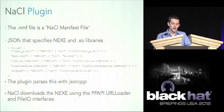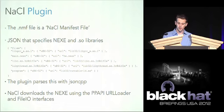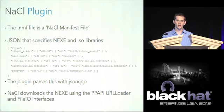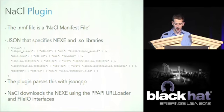The Native Client plug-in looks at the URLs in the manifest and uses the Pepper interfaces — specifically the URL loader and file I/O interfaces — to download the Nexi module. It tells Pepper: here's this plug-in, download it for me, put it on disk or in a memory buffer and give me a handle to it.